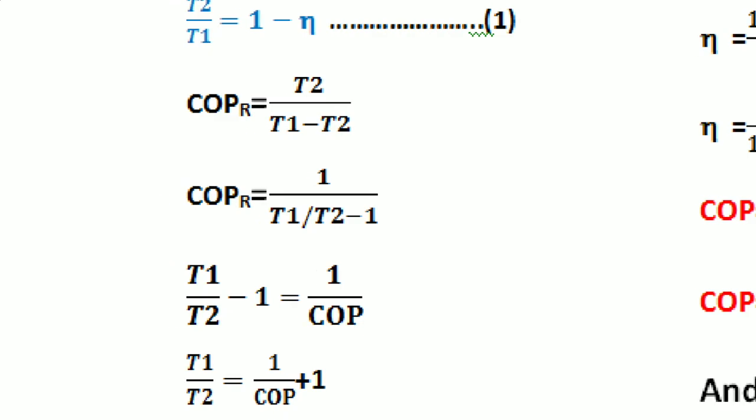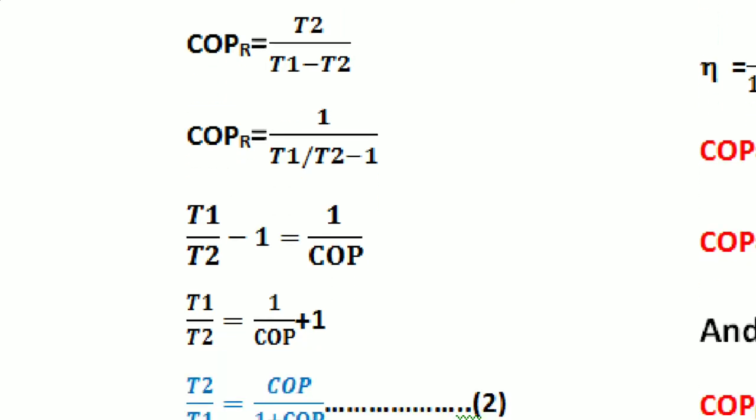We know the COP of the refrigerator is T2 upon (T1 minus T2). From this equation, taking T2 as common on the right-hand side, we get 1 divided by (T1/T2 minus 1). We need to calculate T2/T1, so we take T1/T2 minus 1 to the left side, giving T1/T2 minus 1 = 1/COP.